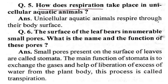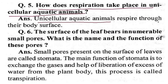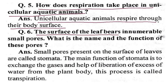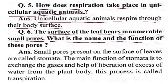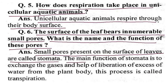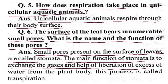How does respiration take place in unicellular aquatic animals? Unicellular aquatic animals respire through their body surface. Now, the surface of the leaf has immutable small pores. Small pores present on the surface of leaves are called stomata. The main function of stomata is to exchange gases and help in the liberation of excess water from the plant body. This process is called transpiration.